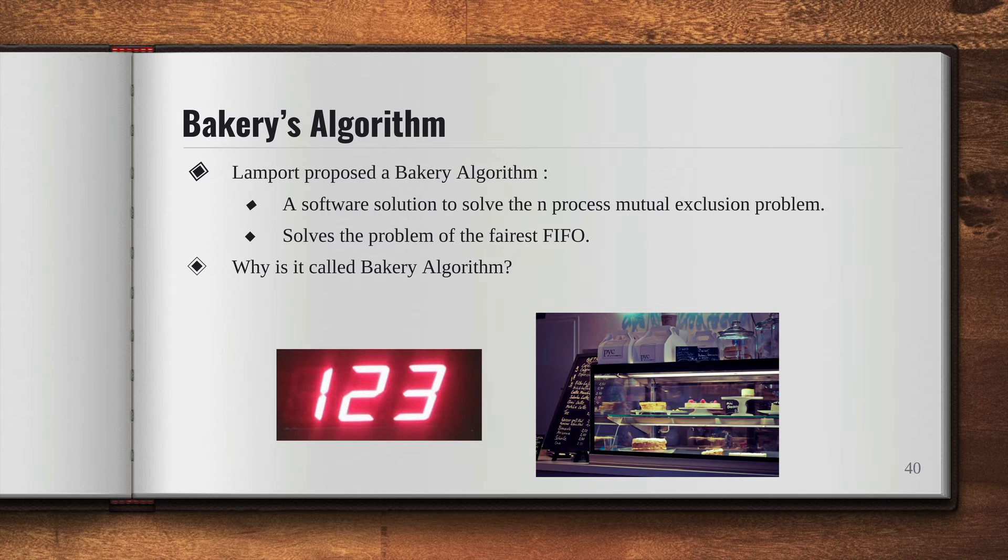So similarly in Bakery's algorithm by Lamport, processes are treated as these customers. Each process gets a token number, and the process with the lowest token number gets to enter the critical section first.